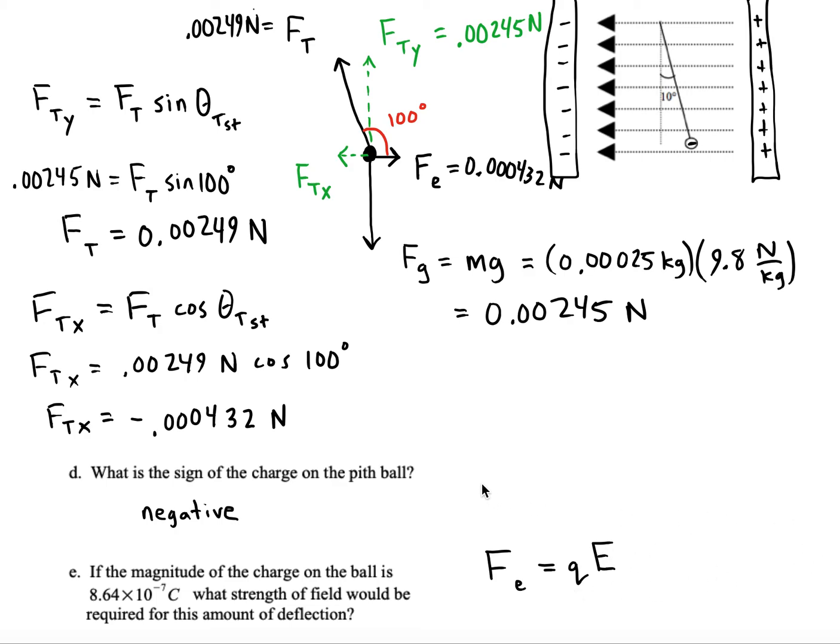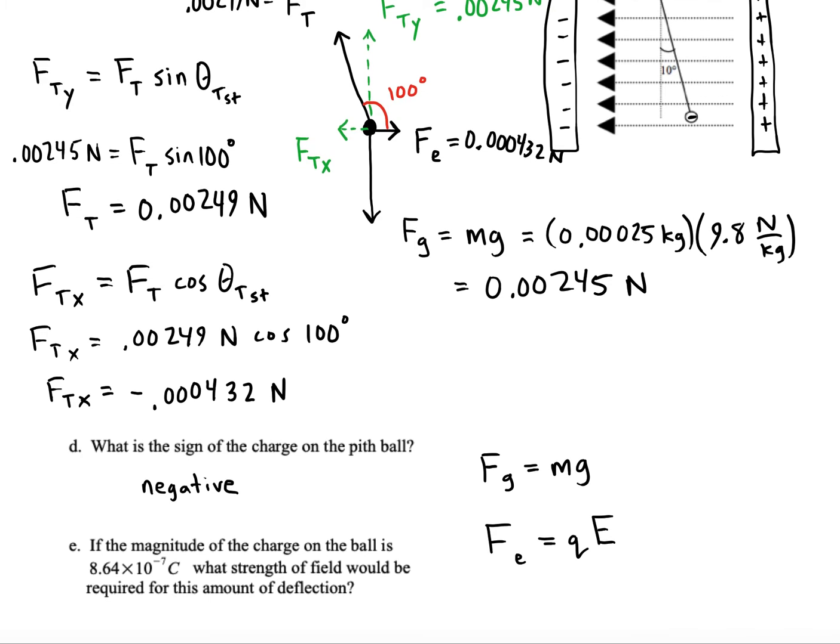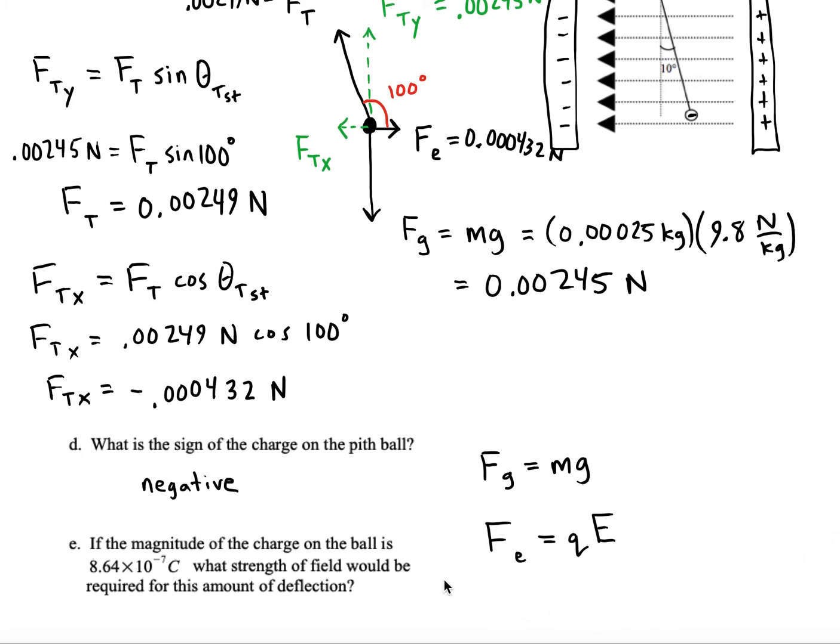This formula is similar to the weight formula in Newton's laws. The weight formula would be Fg equals mg, involving gravitational field and mass. Here we're dealing with electric field and charge. So let's plug in everything we have.